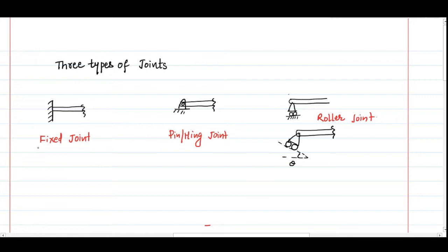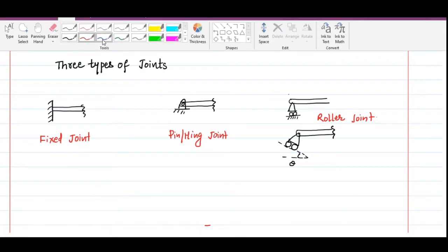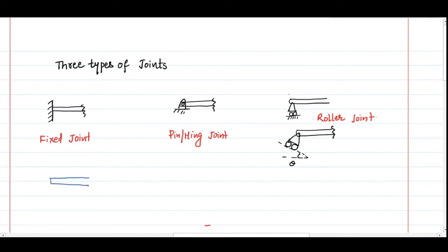Normally we encounter three types of joints: fixed joint, pin or hinged joint, and roller joint. When making a free body diagram and removing joints, we apply forces accordingly. For a fixed joint, removing it requires applying three forces: a horizontal force, a vertical force, and a moment. The fixed joint constrains all three degrees of freedom — no translational and no rotational motion.